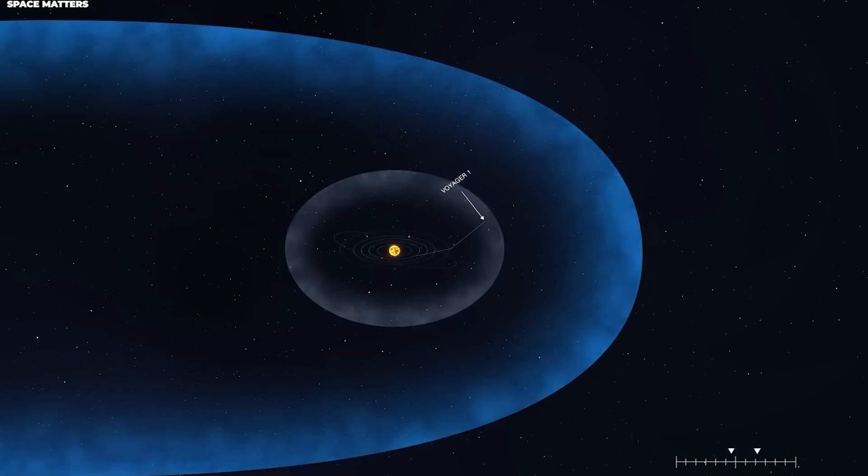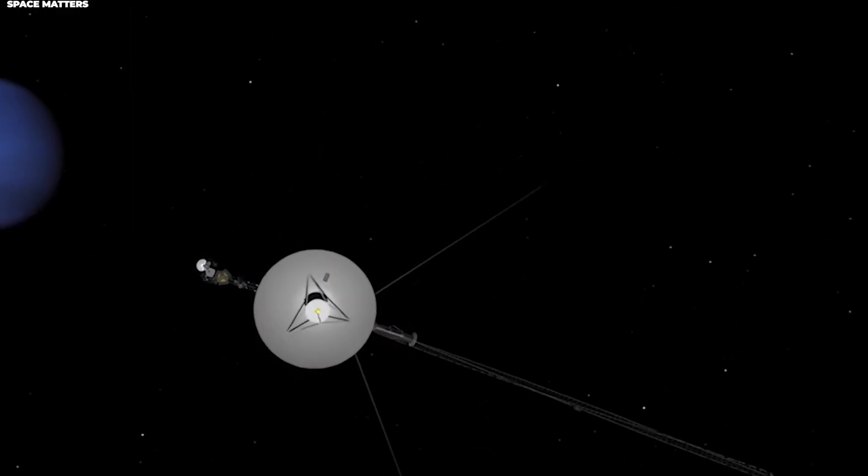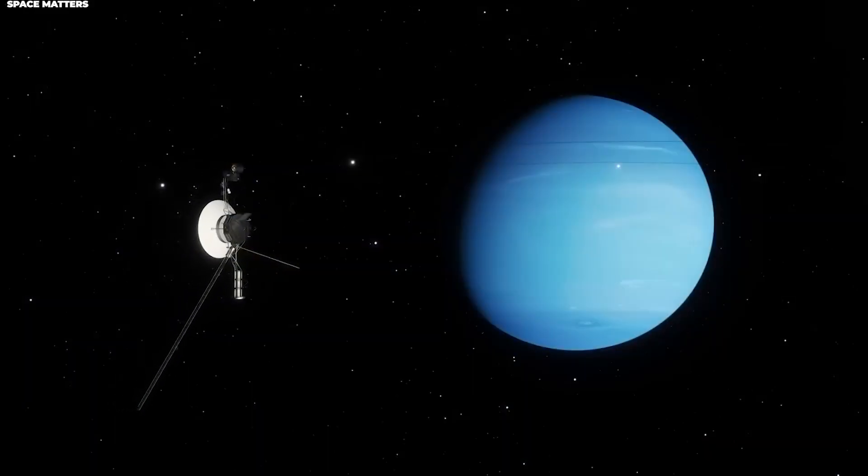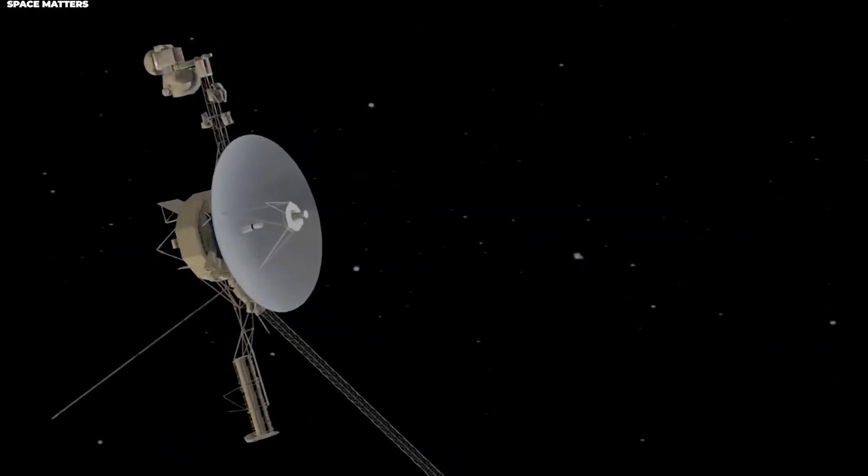They started calculating exactly when the closest approach would occur and what kind of data Voyager 1 might be able to collect. There were several challenges to consider.